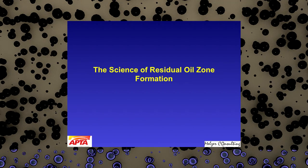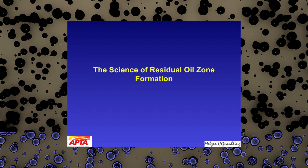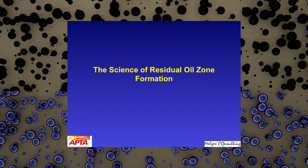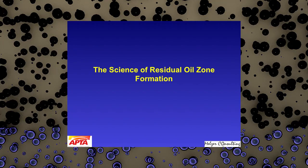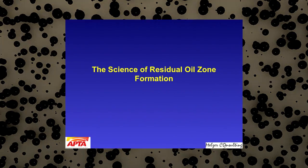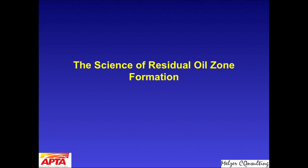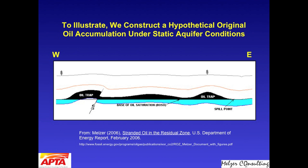For this presentation, we're going to look at four slides and show what we like to call the Type 2 residual oil zone, or ROZ. This first slide is a hypothetical trap representative of the original stage of tectonics and the original entrapment — sometimes called the paleo entrapment first stage.